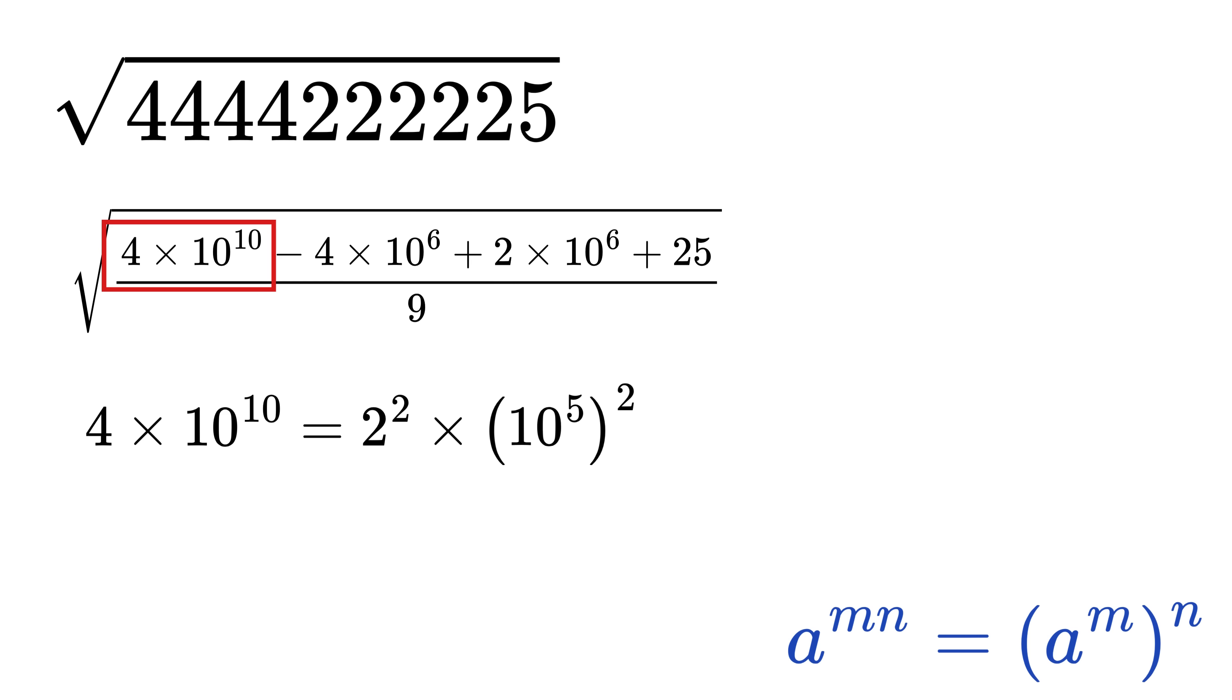Next power rule that we will use says that a raised to m times b raised to m - that is, when two different numbers are raised to same power - we can club them together to get ab whole raised to m.